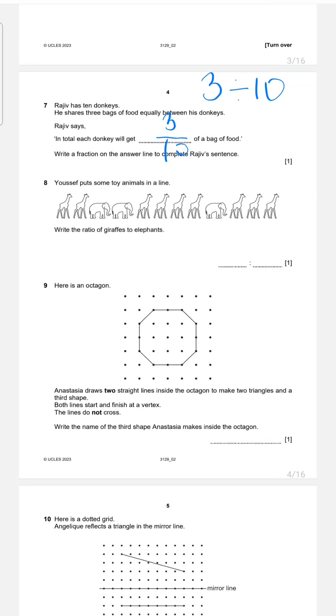Let's continue with eight. Joseph puts some toy animals in a line. Write the ratio of giraffe to elephant. So if they say giraffe first, you need to write the number of giraffe. How many giraffe do we have? Let's count. One, two, three, four, five, six, seven, eight, nine. So we have nine giraffes. So first place, you need to write nine. Second, they ask elephant. So let's count how many elephants do we have? One, two, three. So we need to write three here. So our ratio is nine to three.